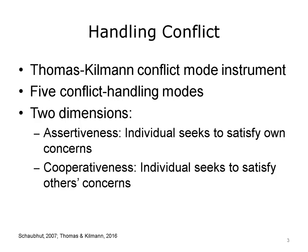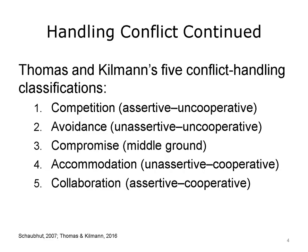The Thomas-Kilman Conflict Mode Instrument, or TKI, describes five conflict-handling modes that can assist in responding to or coping with conflict situations and can also be viewed as traits that individuals habitually use to confront and deal with conflict. The five modes fall under two broad dimensions: assertiveness, when an individual seeks to satisfy his or her own concerns, and cooperativeness, when an individual seeks to satisfy others' concerns.